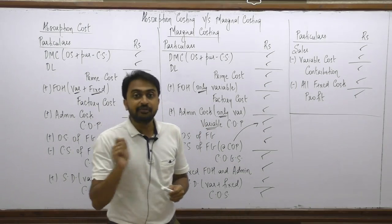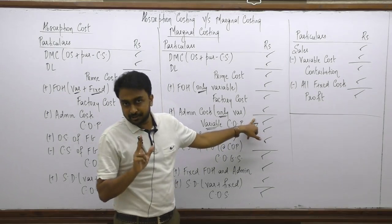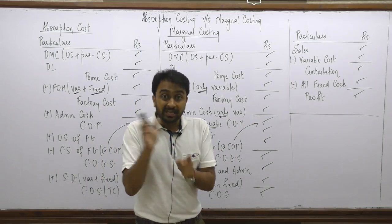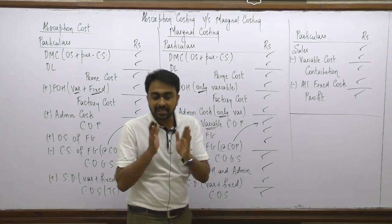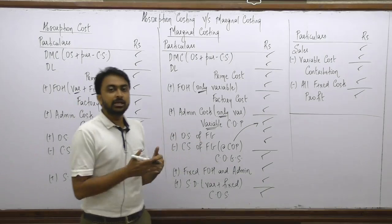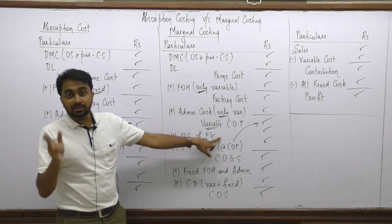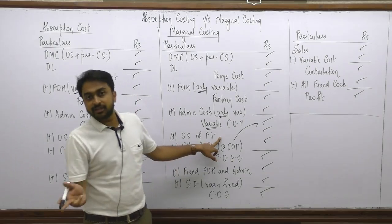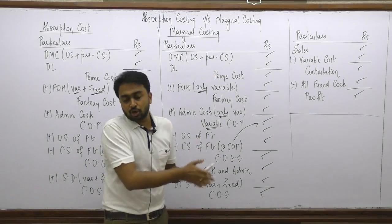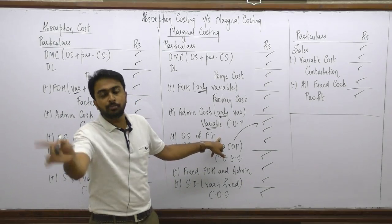Marginal costing includes only the variable content of all costs up to COP — not fixed costs. Fixed costs are not ignored; they will come later but will not be used to value closing stock. For opening stock of finished goods, we use either the given cost or the variable standard cost from last period — since if we are applying marginal costing now, we would have applied it last year too, meaning last year's opening stock was also at variable cost.